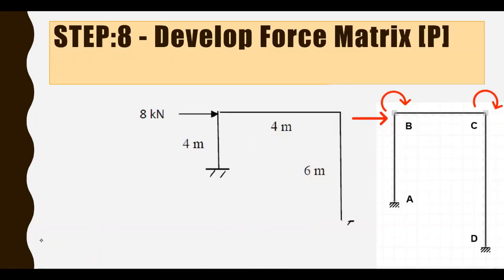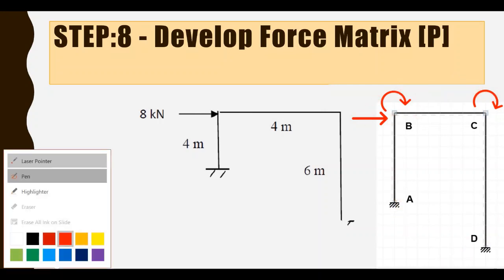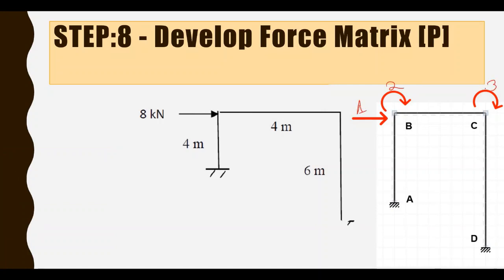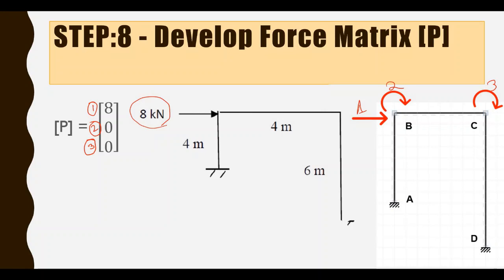Moving to step 8, we develop the force matrix. The force matrix contains the external forces acting at each system coordinate. We have three system coordinates: 1 and 2 at B and 3 at C. There is only one external force — 8 kilonewtons acting at B in the direction of system coordinate 1. So the force matrix B equals [8, 0, 0], since no external force acts at coordinates 2 or 3.